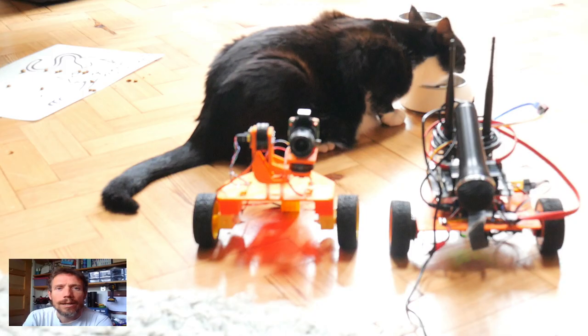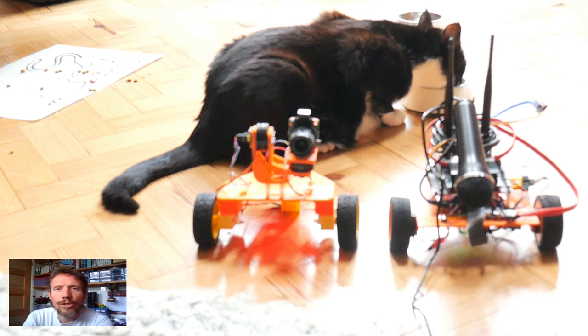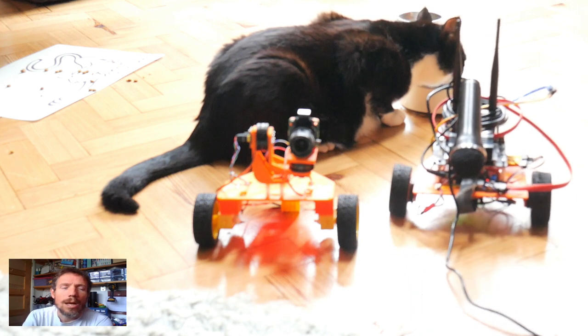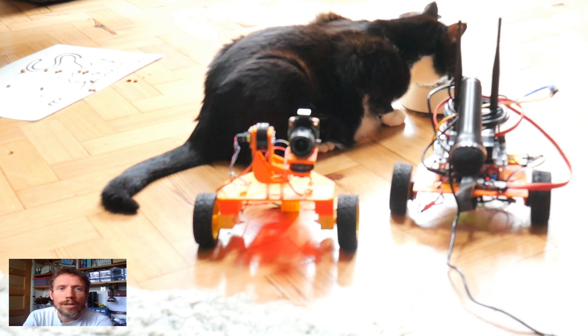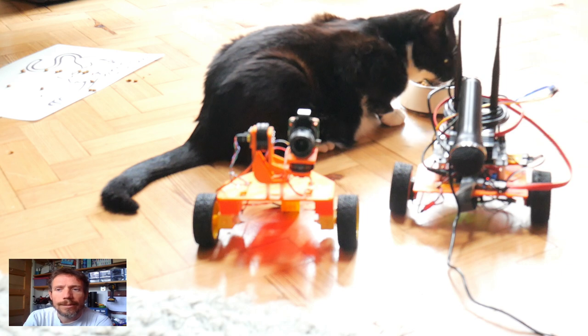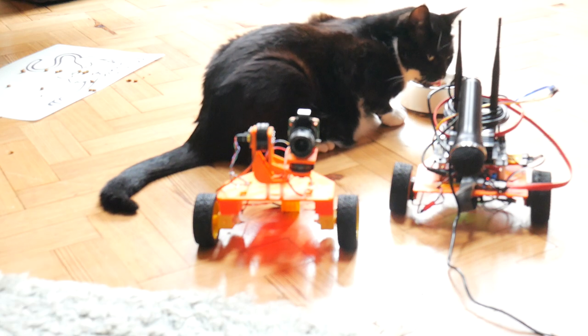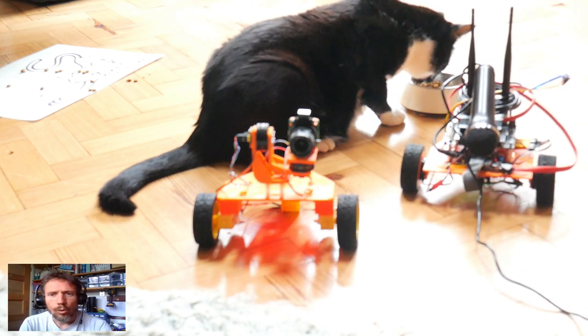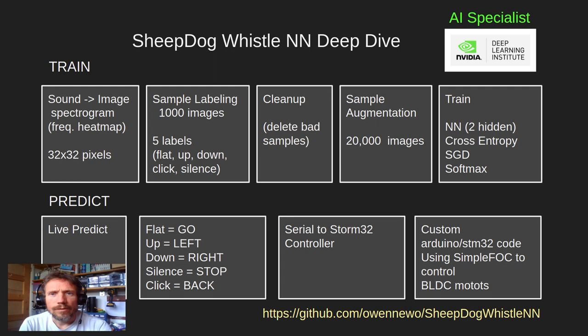Here's an early neural net that understands go and stop signals. If you stick around to the end of the video, I'll show you a bot that's been trained with five whistle commands. As always, all my code is available on the GitHub repo.